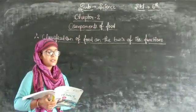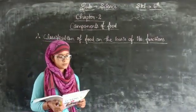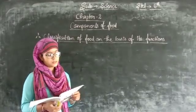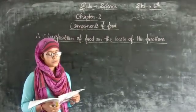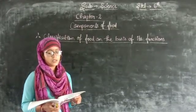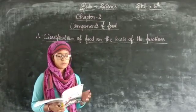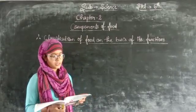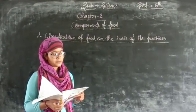Classification of food is based on its functions. Food can be divided mainly into three groups. First one is energy giving food, second one is body building food, and third one is protective food.